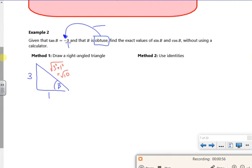Right, so then it wants exact values. So it's obtuse, isn't it? So sin B is the opposite over the hypotenuse. So that will serve up as 3 root 10 over 10. Sin is positive when it's obtuse, so that's fine. We're expecting a positive there.